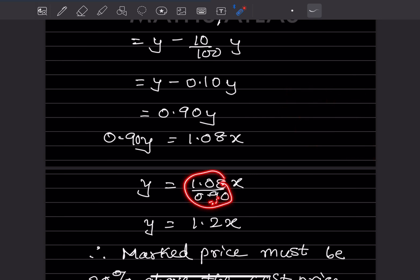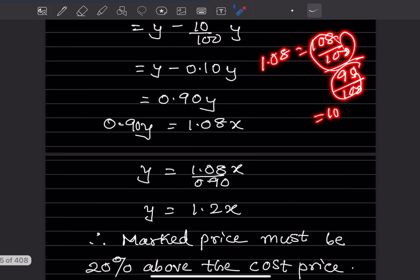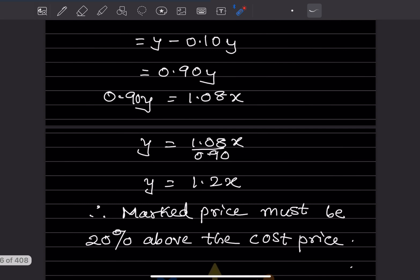You can also solve it directly: 1.08 divided by 0.90 equals 108 divided by 90, which equals 1.2. Therefore y equals 1.2x, meaning the mark price must be 1.2 times the cost price. Since 1.2x is 20% above the cost price, the shopkeeper must mark his goods 20% above the cost price. Do like and subscribe to the channel for notifications of other parts. Thank you.